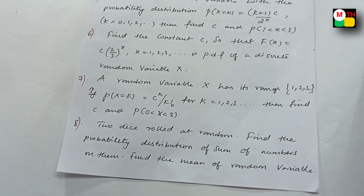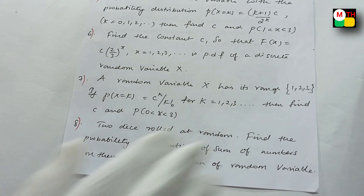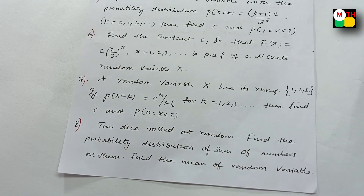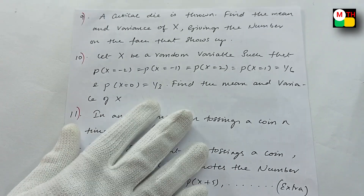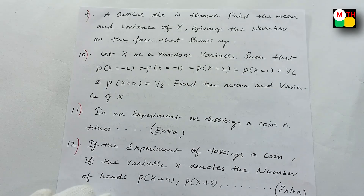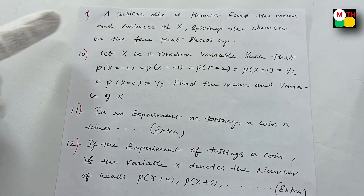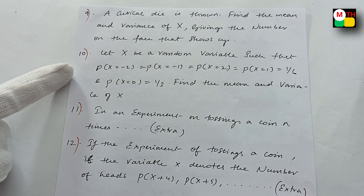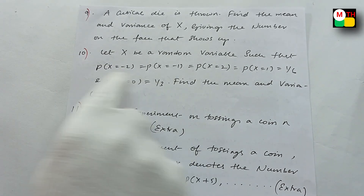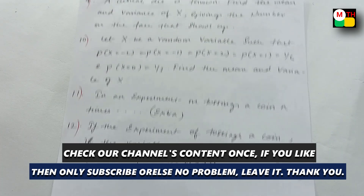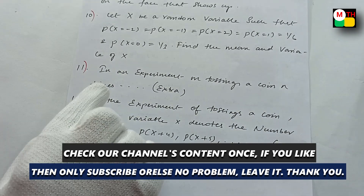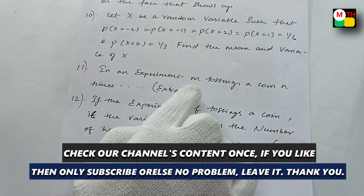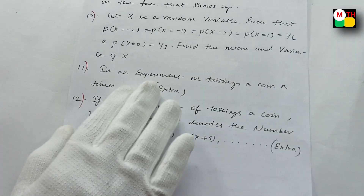Finally, last important things — 7 marks, last question, last unit: random variables. You'll need to check out the 9th — cubical die sum. Here are conditions. You can draw the table. 11th sum: I will tell you about this from the textbook, you can read it. This is an experiment on tossing a coin — it's a sum, and it's a continuation.